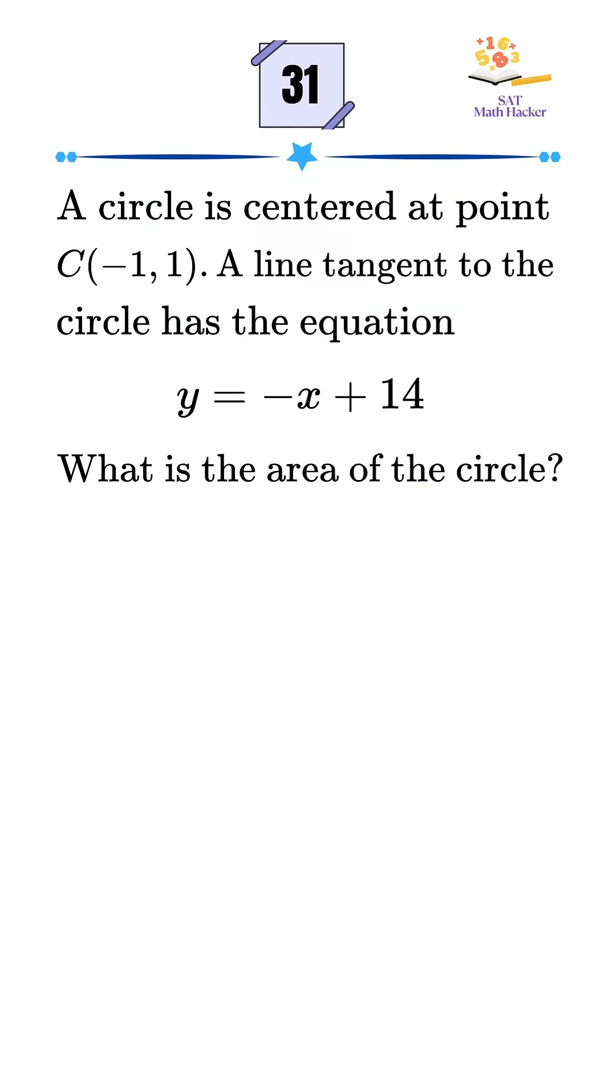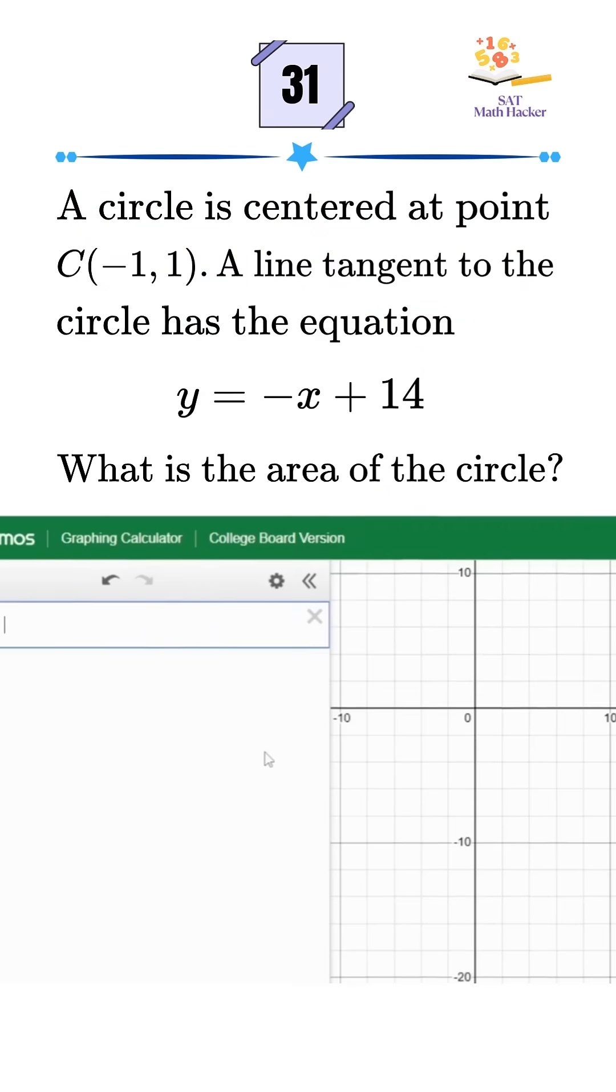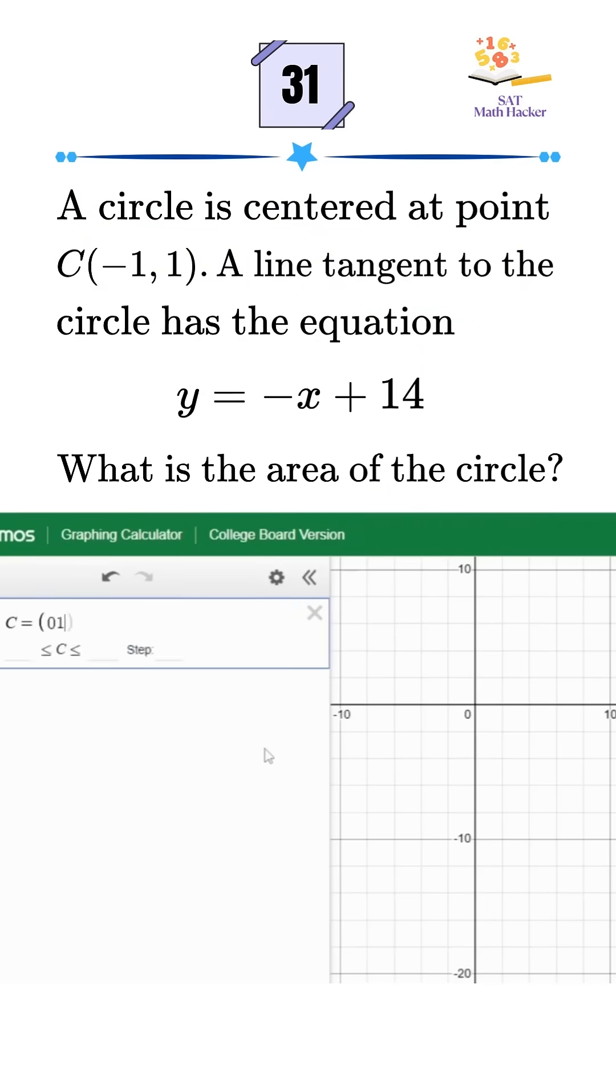Let's solve this visually using Desmos. First, plot the center of the circle. That's the point C at negative 1, 1. Next, plot the tangent line, y equals negative x plus 14. This line touches the circle at exactly one point.